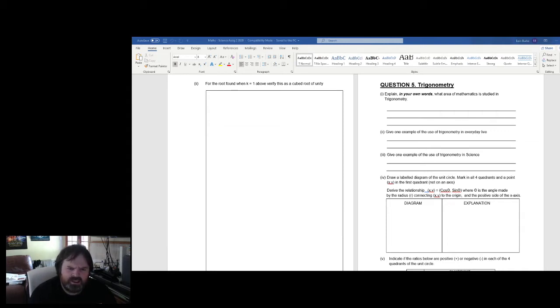Part four here is kind of a fairly elegant little proof. It's about the unit circle. Now a unit circle is a circle of radius one. You're going to be asked to sketch a diagram there of the unit circle. You're going to be asked to mark in all four quadrants and a point xy on the first quadrant which is not a point on the axis. You need to explain how the relationship xy equals cos theta sine theta. So the point x maps to cos theta and the point y equals sine theta where theta is the angle made by the radius connecting xy to the origin and the positive side of the x-axis. All right this is actually an elegant little proof.